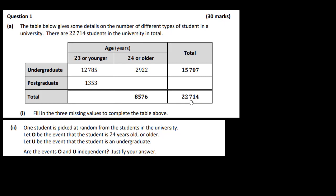Fill in the missing values to complete the table. This is fairly straightforward. We have a total here and a total here, so all we have to do is subtract one from the other to get the missing values. It's just a lot of calculator work, so I'm just going to write in the answers: 7,007, 5,654, and 14,138.